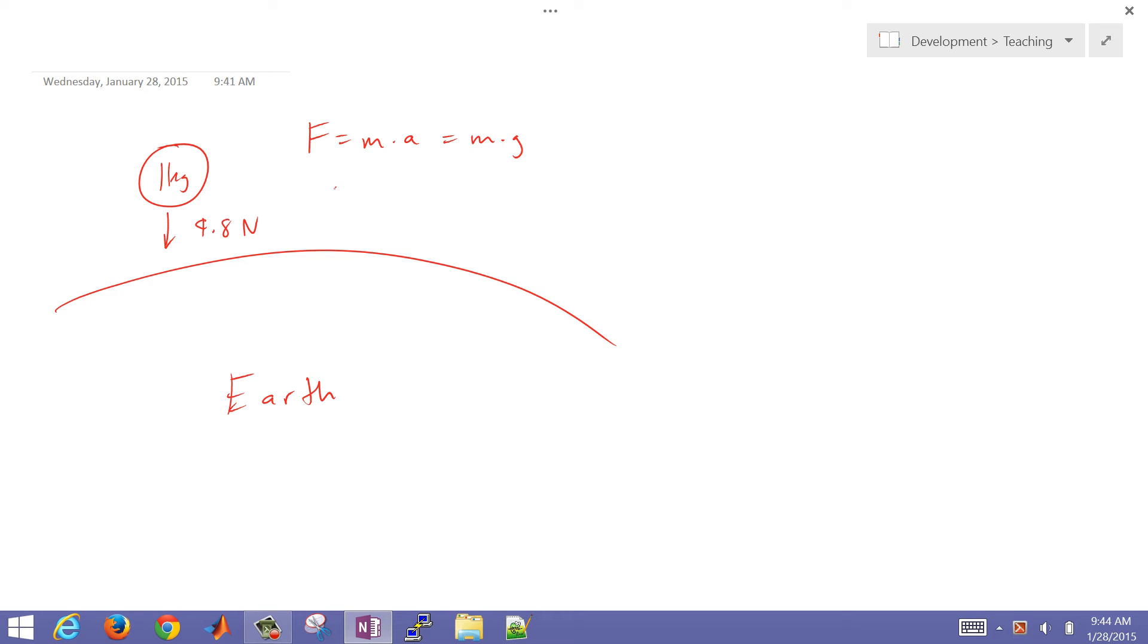So on Earth, if the gravitational constant is 9.8 meters per second squared, that's how we get one kilogram exerting 9.8 newtons of force.